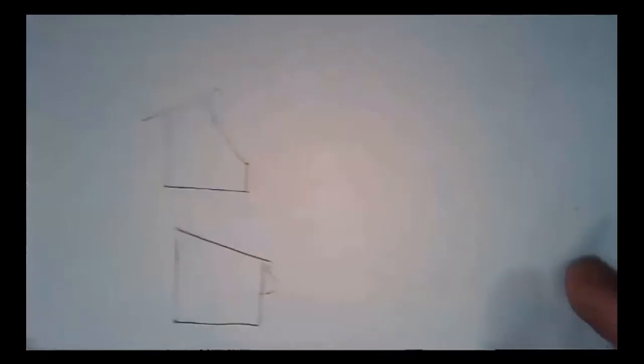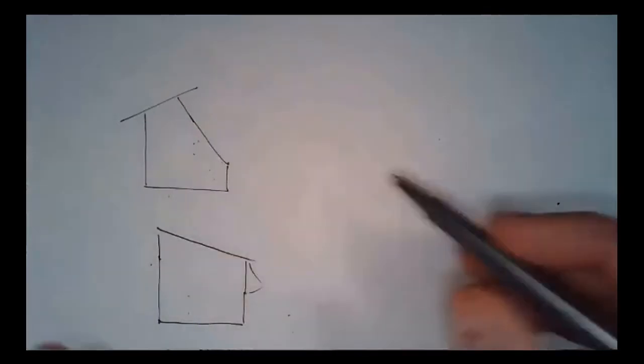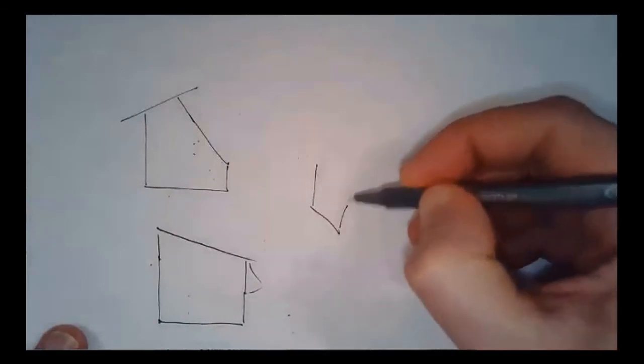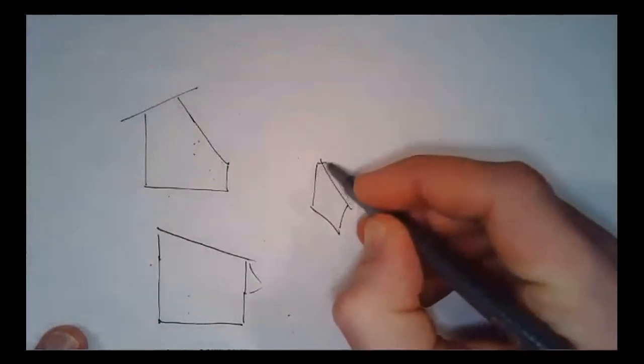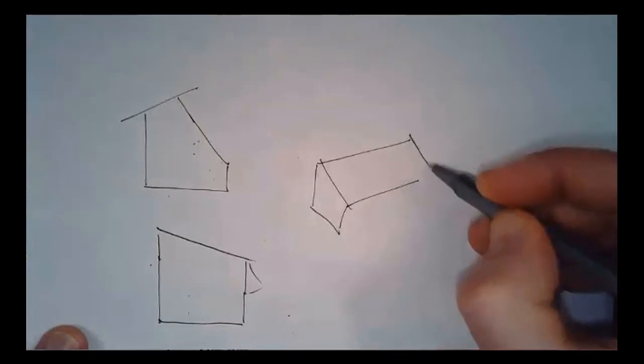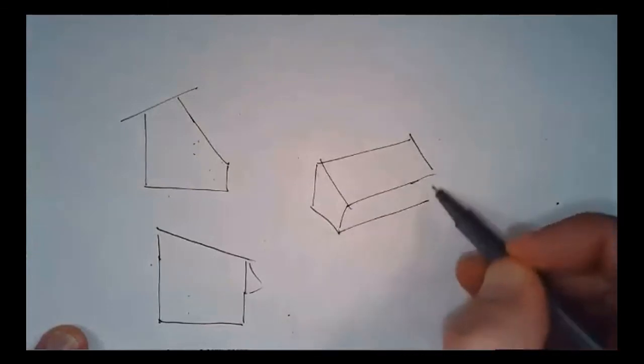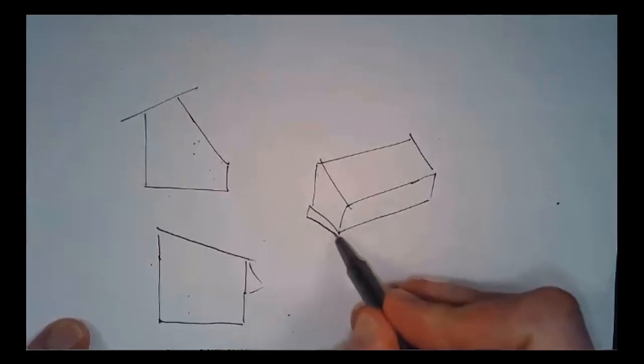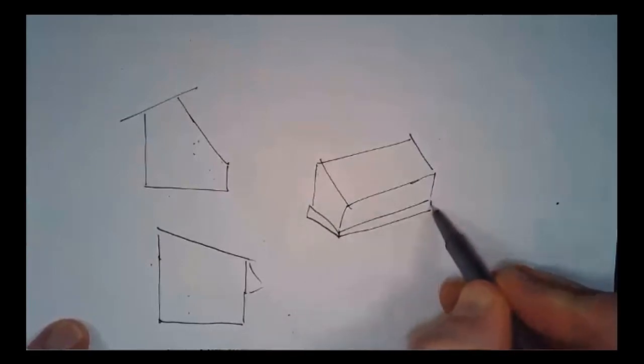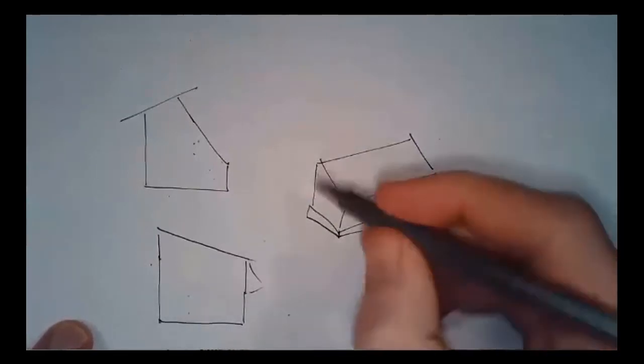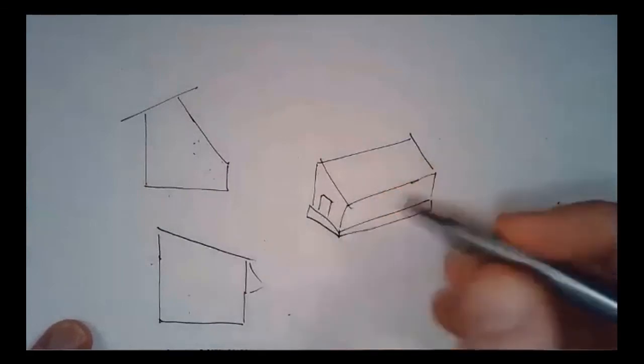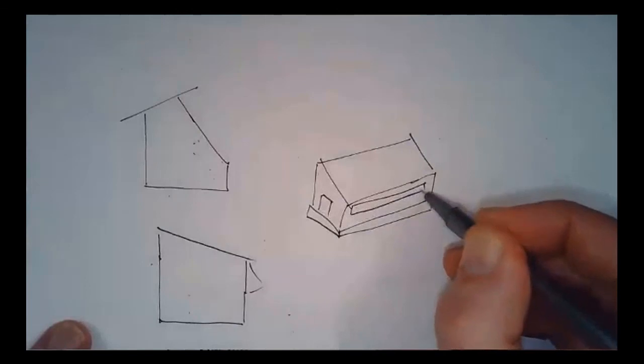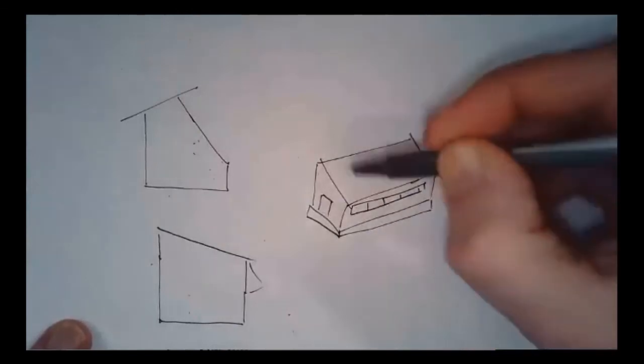And so then once you have your aspect ratio and you have your cross section, then from there you can figure out what the three-dimensional shape is going to look like. And once you've got the three-dimensional shape, then you can start to specify things like insulation, where doors are going to go, where vent walls are going to go in the front,